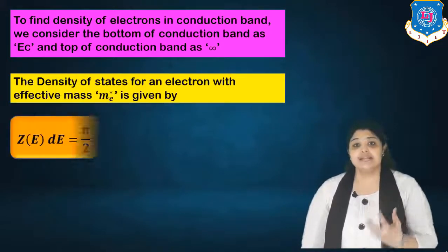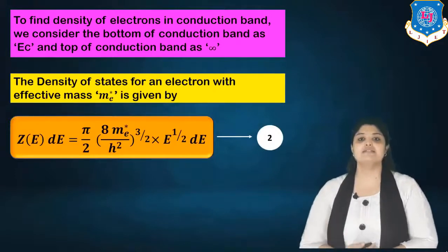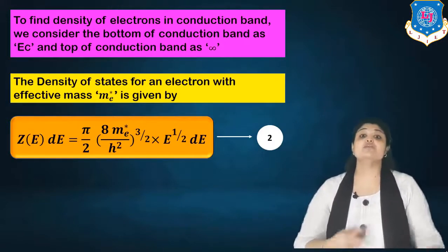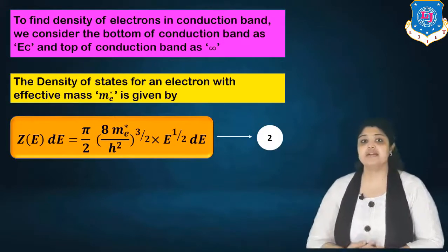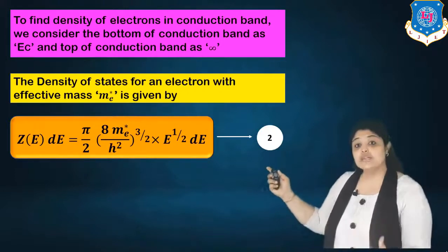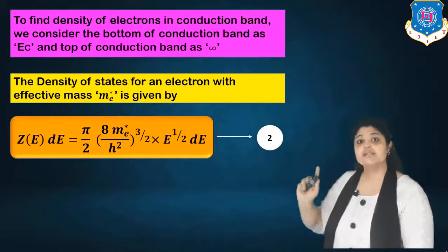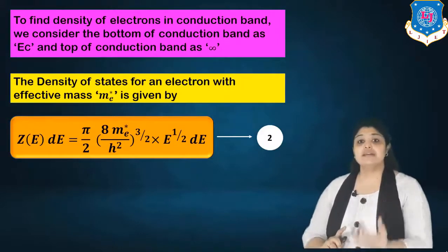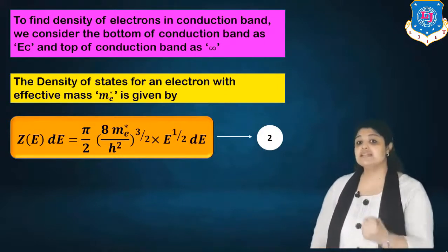The density of states for an electron with effective mass ME* is given by Z(E)dE. We consider effective mass ME* because of the periodic potential in the Kronig-Penney model. The equation of Z(E)dE, which we derived in the chapter on electronic materials, is: Z(E) equals (π/2) × (8ME*/ℏ²)^(3/2) × E^(1/2) dE.